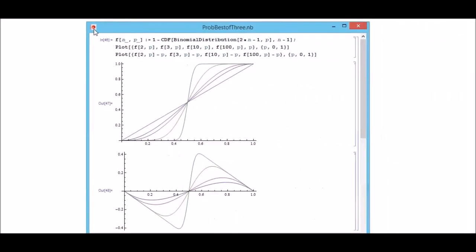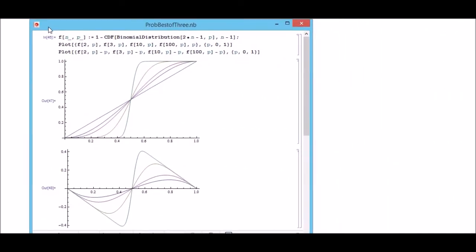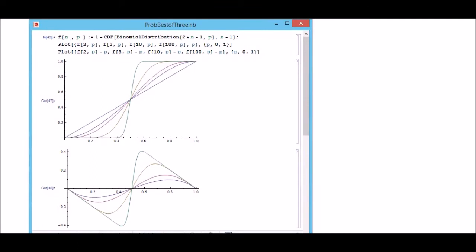And I've prepared a little bit on Mathematica—you might know this from last time—and here you can see what really happens if we increase the number of sets that have to be won. So this is the binomial distribution for 2n minus 1 sets, which means you have to win n sets.